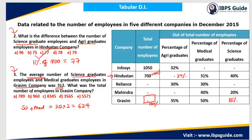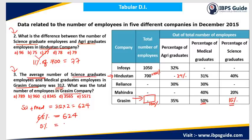We need the total number of employees in Grasim. Science (15%) plus medical (50%) = 65%, and that equals 624. Dividing: 65% = 624, so 5% = 48. Therefore 100% = 48 × 20 = 960. The total number of employees in Grasim company is 960. The answer is Option B.